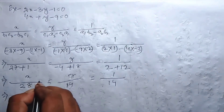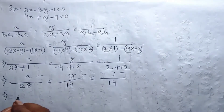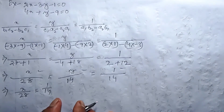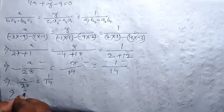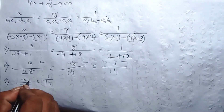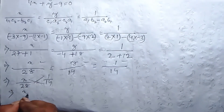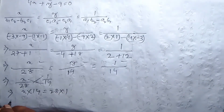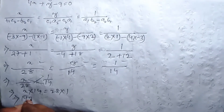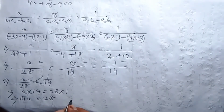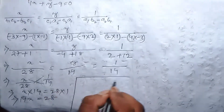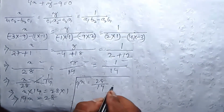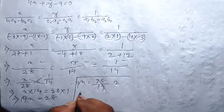Now a numerical example. We get x by 28 equal 1 by 14. So x into 14 equal 28 into 1, which gives 14 x equal 28. Therefore x equal 28 by 14, which gives x equal 2.